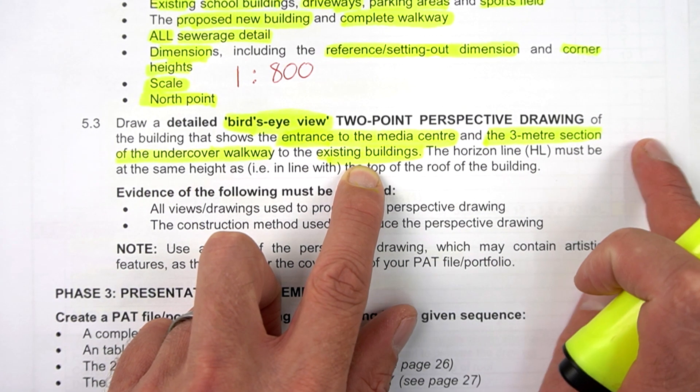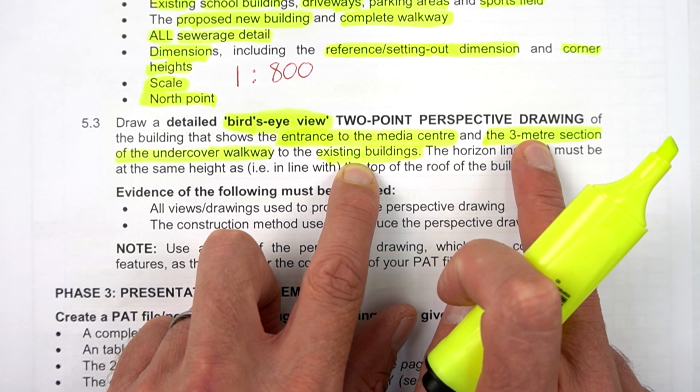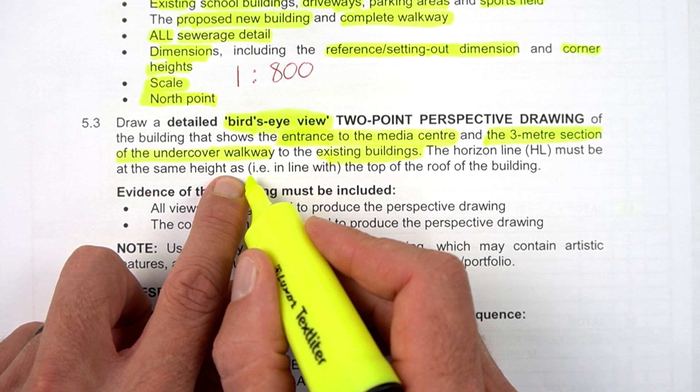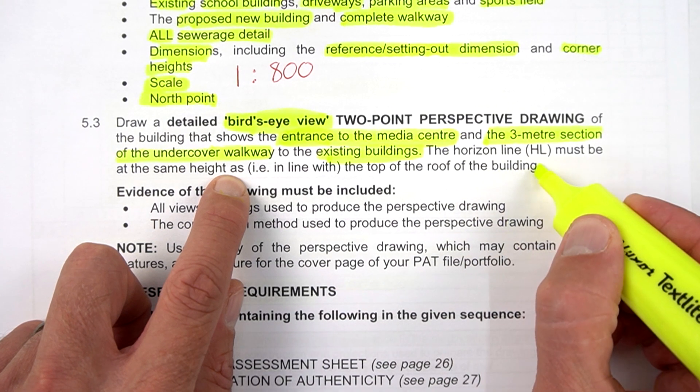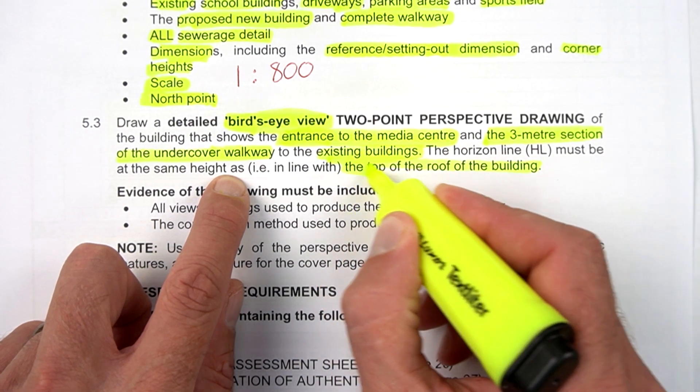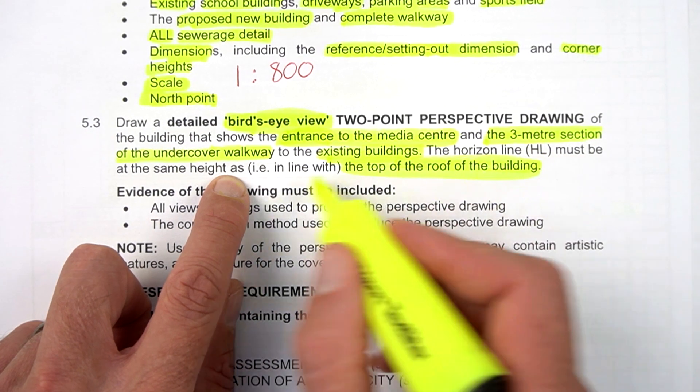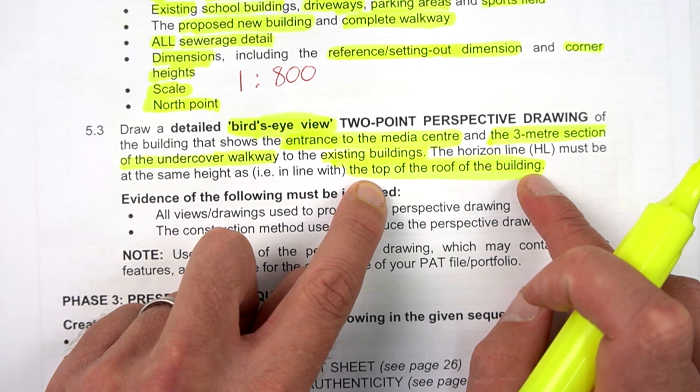The horizon line must be at the same height as, or in line with, the top of the roof of the building. They specify for you the height of that horizon line. It must be the same height as the roof of the building. I'm going to show you an example of how to position that.